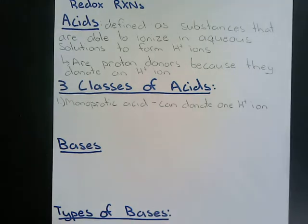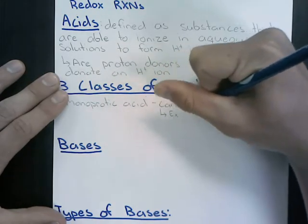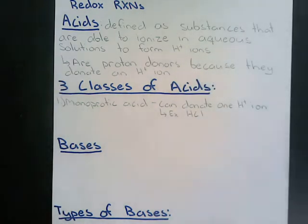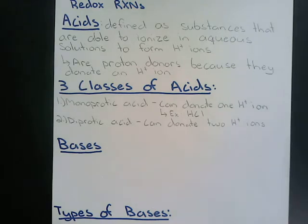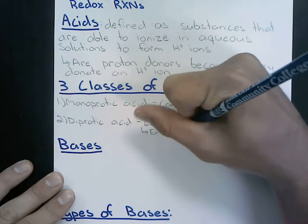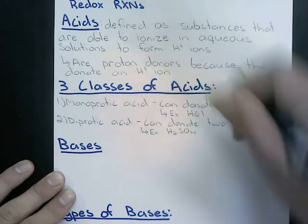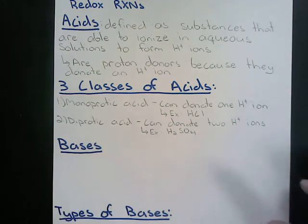An example of a monoprotic acid would be hydrochloric acid. Another type of acid is a diprotic acid — an acid that ionizes to form two H+ ions or hydronium ions. An example of a diprotic acid would be sulfuric acid. The formula for sulfuric acid is H2SO4, and because it has two H's to be donated, it is considered a diprotic acid.